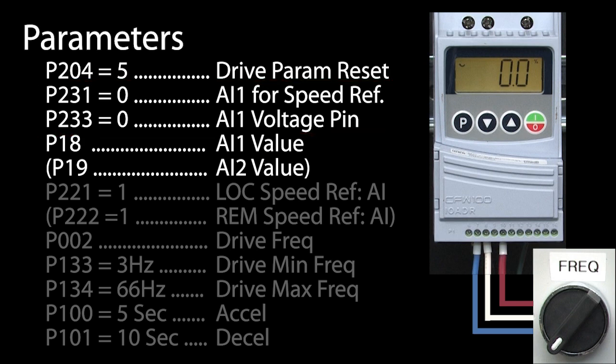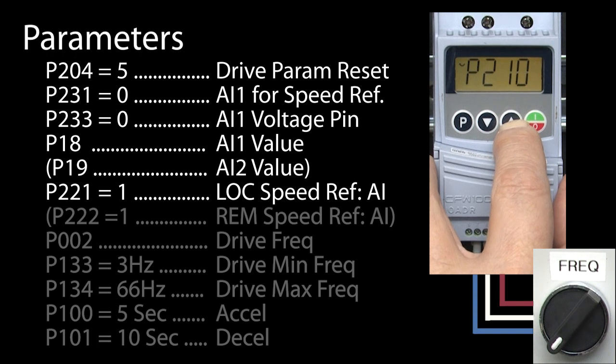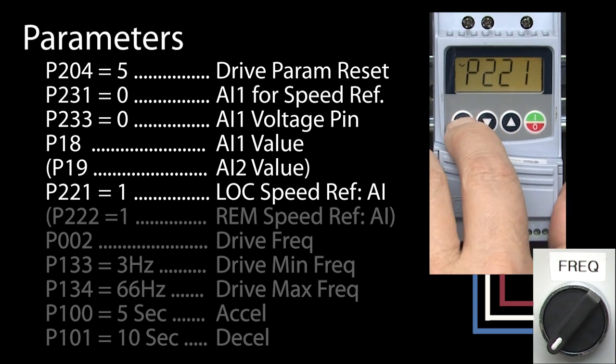So the only thing left to do is tell the drive to use the potentiometer on analog input 1 and not the keypad to control the frequency of the drive, which will control the speed of the motor. To do that, we go to parameter 221 because we are using the drive in local mode.